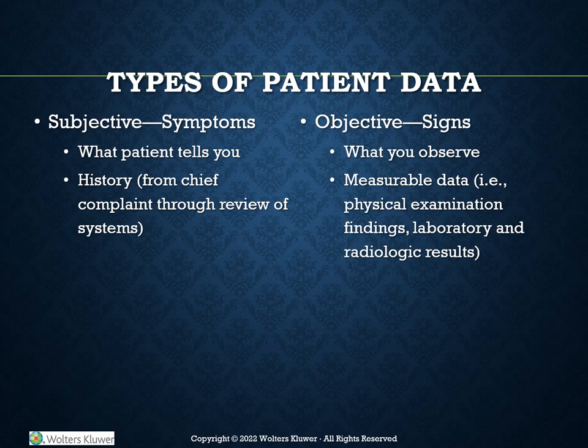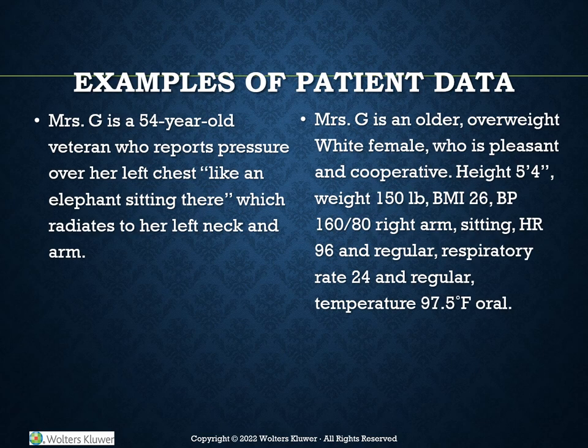Objective data covers signs, findings, and results that you actually observe or measure. These are two different examples of subjective versus objective data, with subjective data on the left and objective on the right.